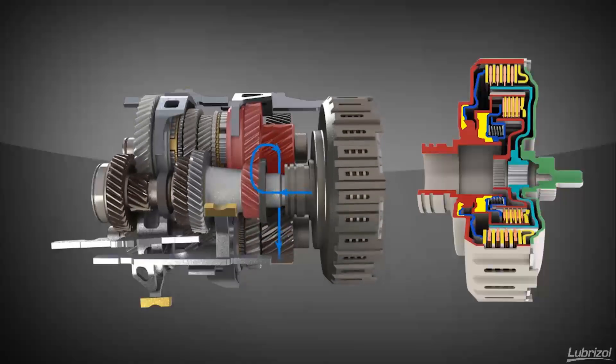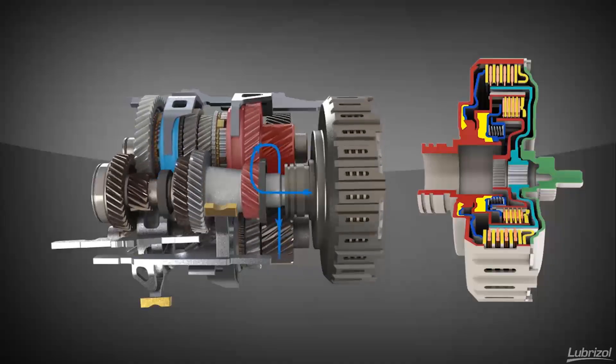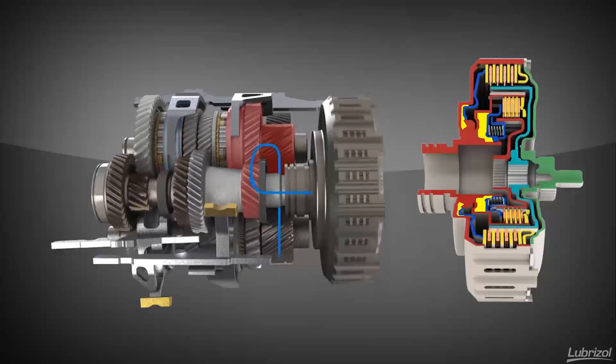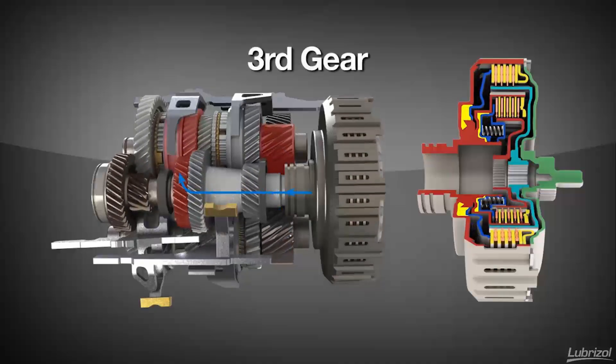As the vehicle accelerates through second gear, the shift fork system will deselect first gear and select third. When conditions are appropriate, the inner clutch will disengage, the outer will re-engage, and the power will then flow through the pre-selected third gear.